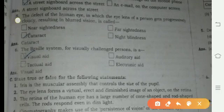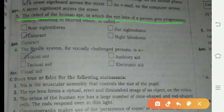The defect of the human eye in which the eye lens of a person gets progressively cloudy, resulting in blurred vision, is called cataract. The Braille system for visually challenged persons is a visual aid.